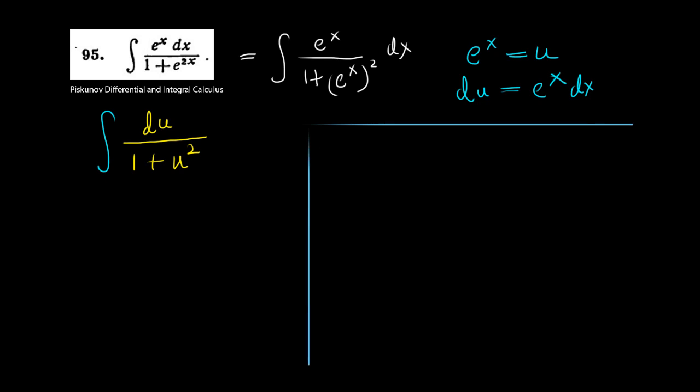Suppose that y equals tan^(-1)(x). Now let's take the tangent of both sides to get that x equals tan(y).